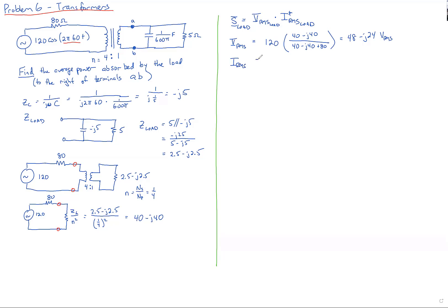The current is even easier — it's the source voltage divided by the total impedance. So we have 120V RMS divided by a total impedance of 80 + 40 − j40Ω. The calculator gives us 0.9 + j0.3 amps RMS.